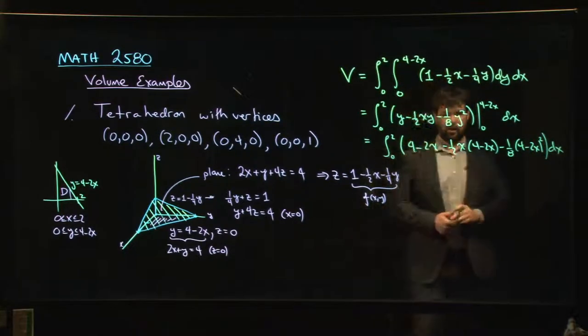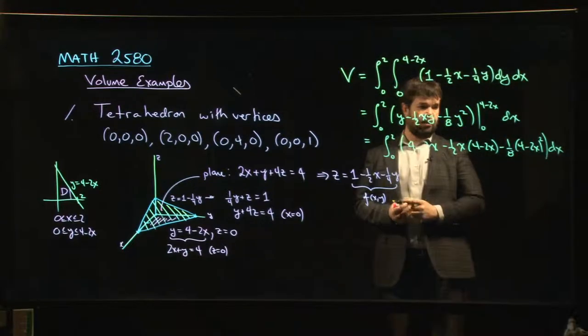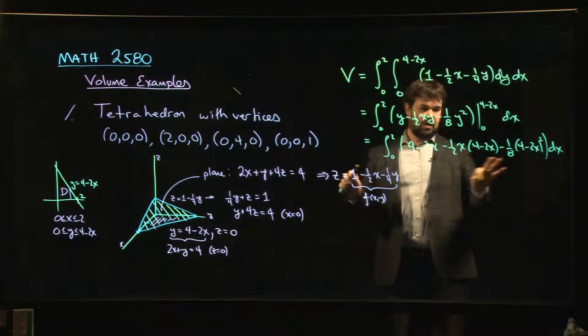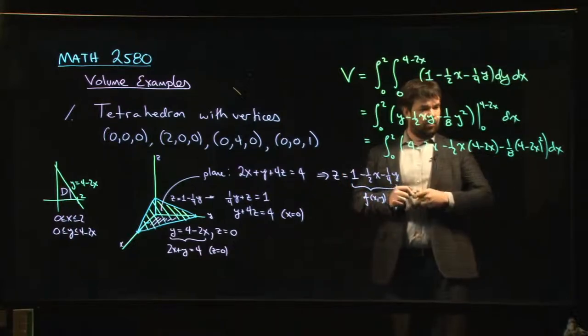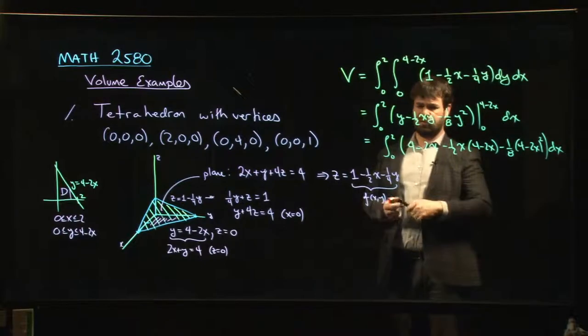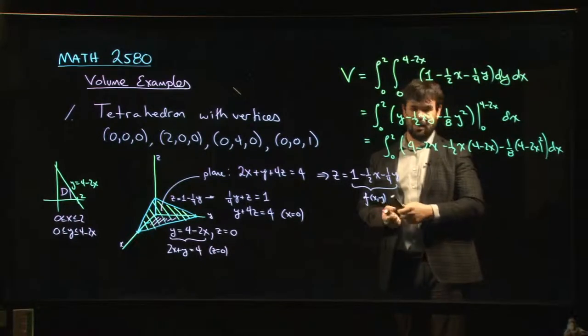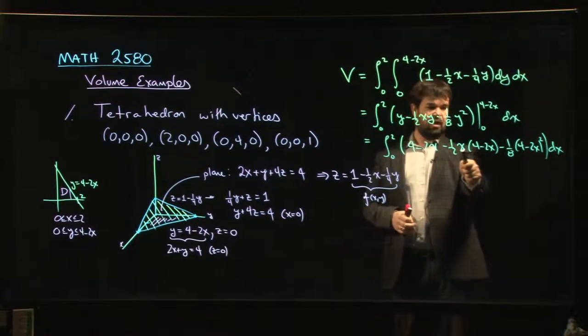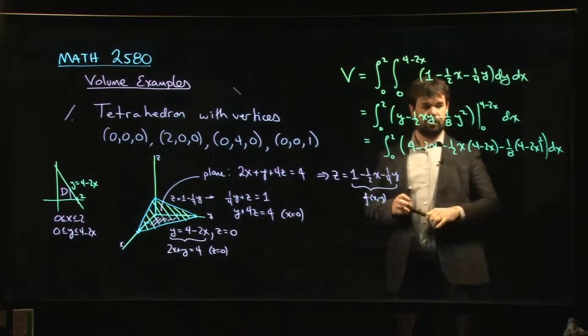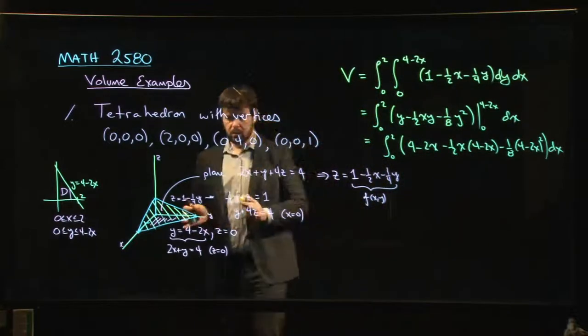And you need to integrate that with respect to X. So of course, if you wanted to do this, probably the right approach is to clean things up, simplify. I think that's going to be easier than doing a substitution. Maybe there's a temptation to substitute the four minus two X, but I think you're probably going to have an easier time just expanding these out, simplifying, integrating term by term, you'll get your answer.